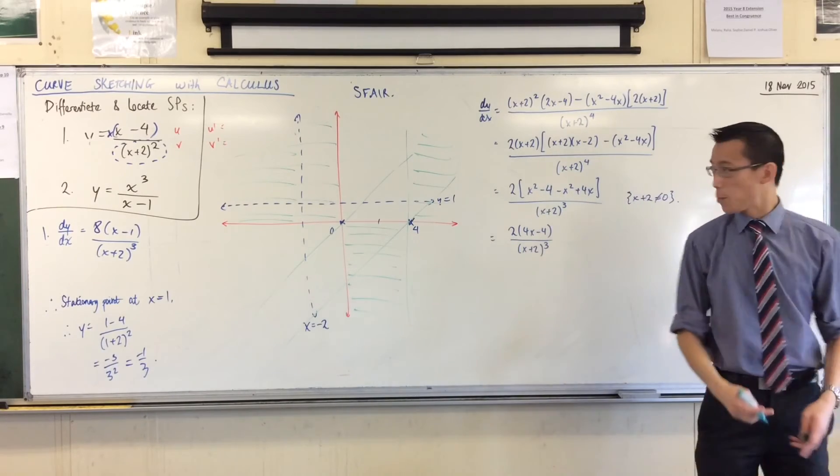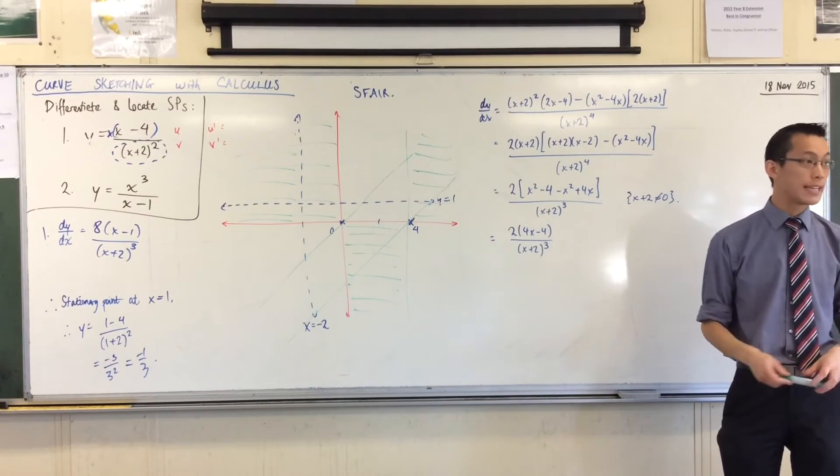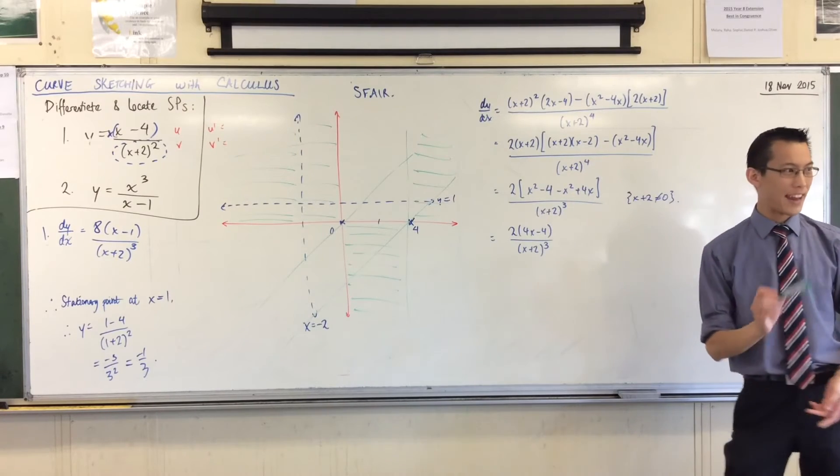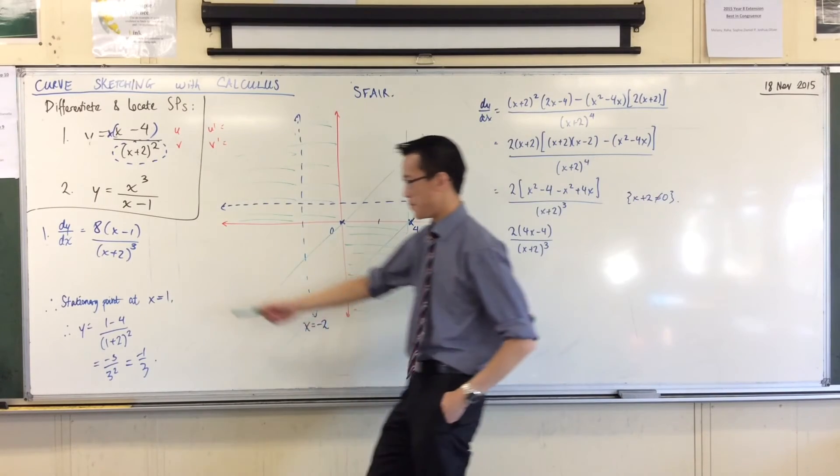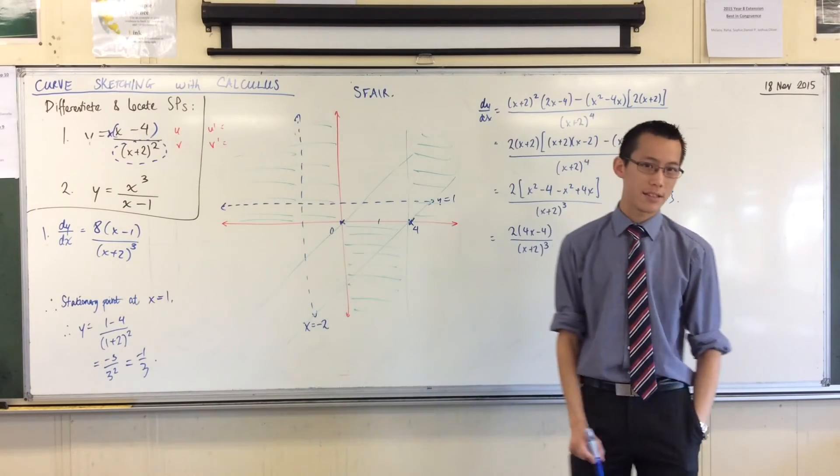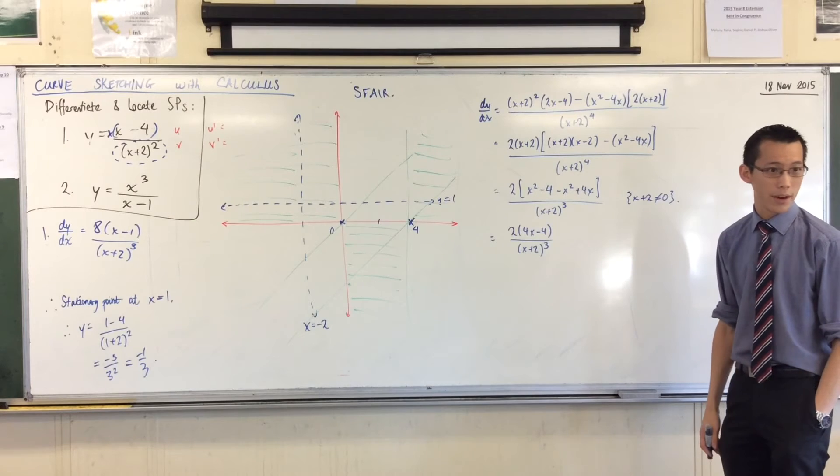Okay, now at this point, you actually could get a pretty good idea of where the graph goes, okay? But you have an extra piece of information from this guy over here, which gives you just that little bit more detail. I know there's a stationary point, okay? Where is the stationary point?